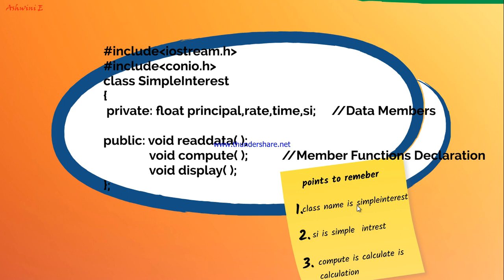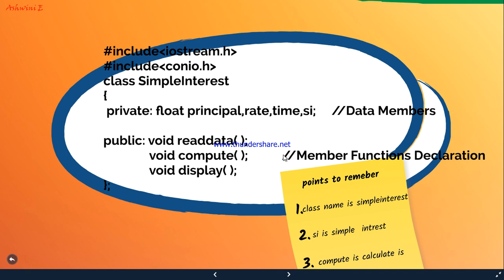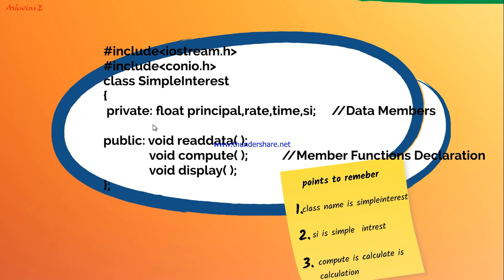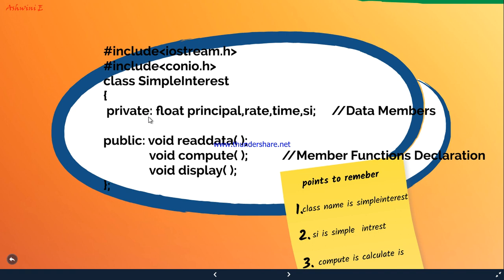Next comes the class. I have told you how to declare a class: class space class-name, within the flower braces you write your data members and member functions, ending with a closing flower brace and a semicolon. Here the class name is 'SimpleInterest'. Inside the flower braces, under the private section, you are going to declare principal, rate, time, and simple interest as data members, under the data type float.